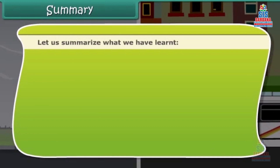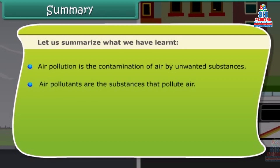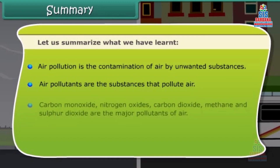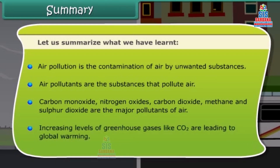Let us summarize what we have learned. Air pollution is the contamination of air by unwanted substances. Air pollutants are the substances that pollute air. Carbon monoxide, nitrogen oxides, carbon dioxide, methane, and sulfur dioxide are the major pollutants of air. Increasing levels of greenhouse gases like CO2 are leading to global warming.